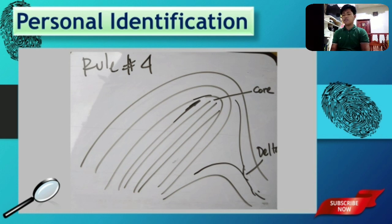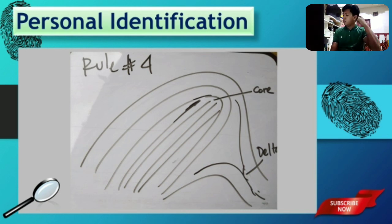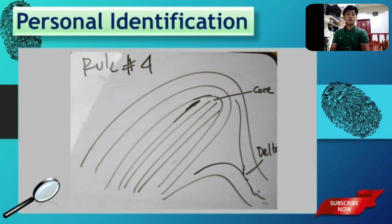When there is an even number of rods, we find the two innermost rods — those nearest to the center — and select the one farthest from the delta as the core. For example, if there are five rods, the center one is automatically the core. If there are four rods, we select the two innermost, then choose the farthest from the delta. The delta is labeled accordingly. That's how we decide the location of the core in this scenario.